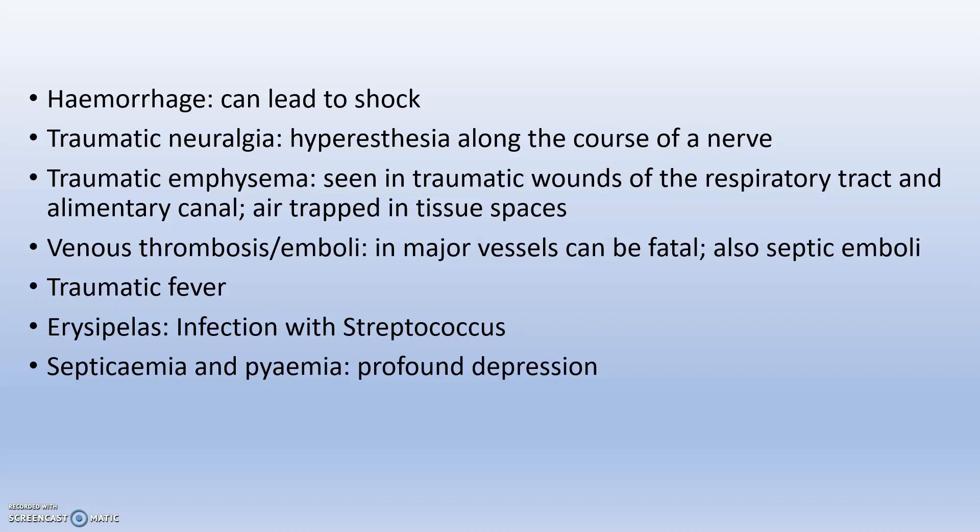Next is traumatic neuralgia, which is hyperesthesia along the course of a nerve. Next is traumatic emphysema: whenever traumatic wounds of the respiratory tract occur, air is trapped in tissue spaces, leading to traumatic emphysema. Next is venous thrombosis or emboli — in major vessels, thrombi or emboli may form, which can even lead to death.